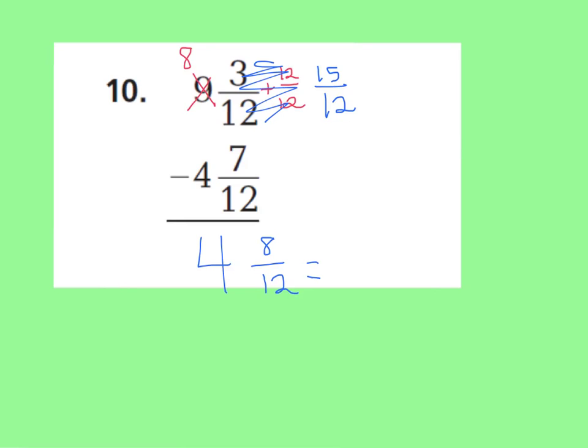Now you can simplify 8 twelfths — 8 divided by 4 is 2, and 12 divided by 4 is 3. So the final answer is 4 wholes and 2 thirds. I hope you got this one right.